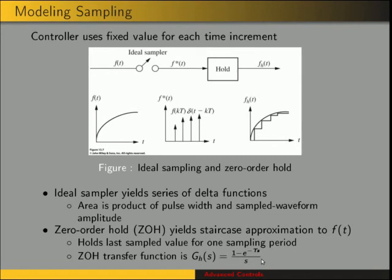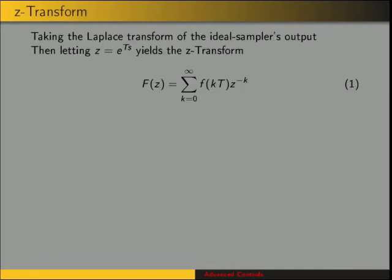In order to work with discrete systems, we use the Z-transform. The reason for doing that is to work with this variable z instead of the more cumbersome e to the Ts. We make that substitution and end up with this definition for the Z-transform. Our transformed function in the z-domain, F of z, is equal to the summation of our sample time function multiplied by z to the negative k.